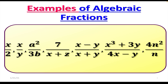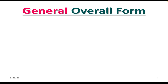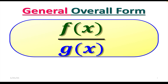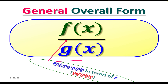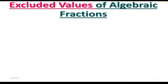It could be one letter, x or a, or it could be more than one letter. The general overall form of an algebraic fraction is f over g, where f and g are any polynomials in terms of x or other variables. Algebraic fractions might have more than one variable.